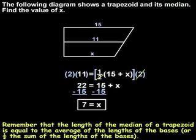As a last step, I would do a quick check to make sure that this answer makes sense. In other words, now that we know that our bases are 7 and 15, and our median is 11, does the length of the median appear to be the average of the lengths of the bases.